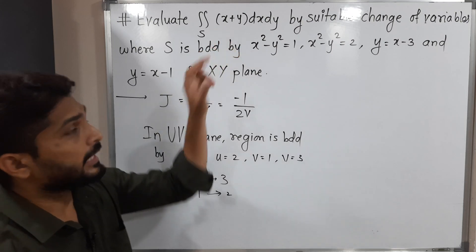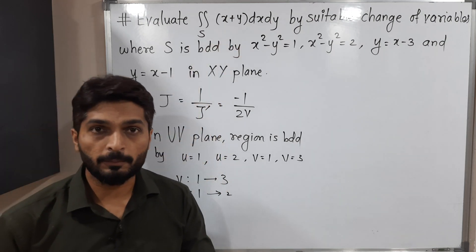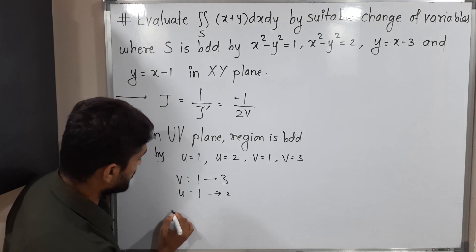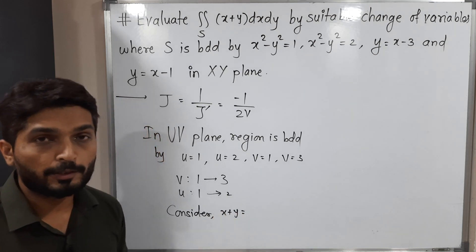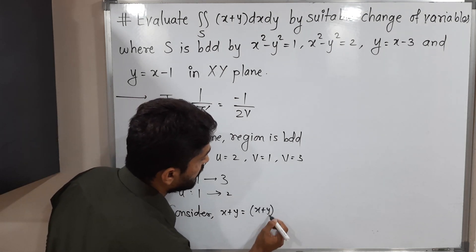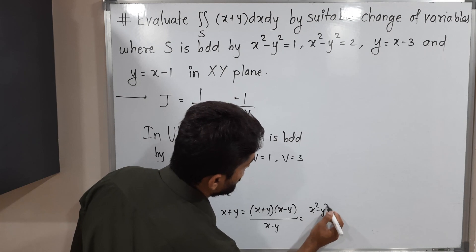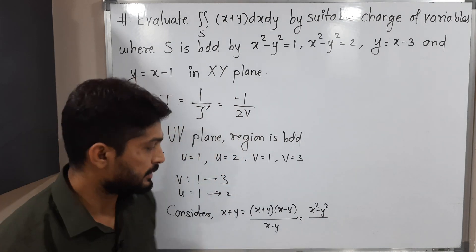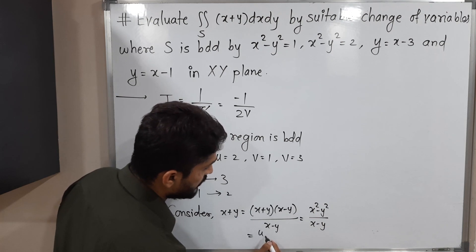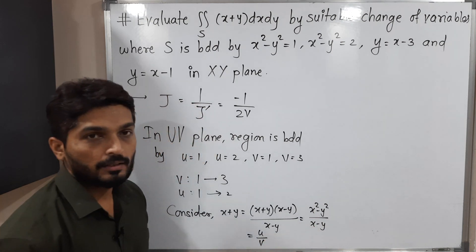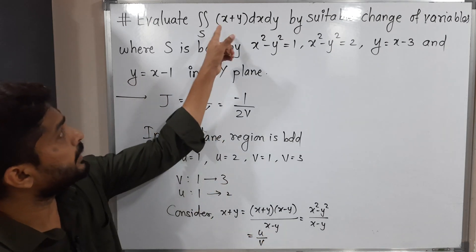We still need to express x + y in terms of u and v. Multiplying numerator and denominator by (x - y): x + y = (x + y)(x - y) / (x - y) = (x² - y²) / (x - y) = u/v. So x + y is replaced by u/v.